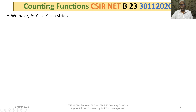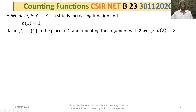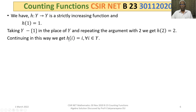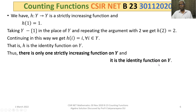Continuing the argument: we have h: Y → Y strictly increasing with h(1) = 1. Now taking Y minus {1} — all elements of Y other than 1 — and repeating the argument with 2, we get h(2) = 2. Continuing in this way, h(i) = i for all i in Y. That is, h is the identity function on Y. This shows there is only one strictly increasing function on a finite set Y to itself, and it is the identity function.